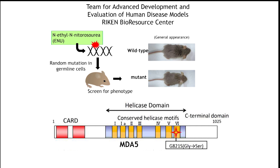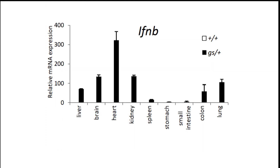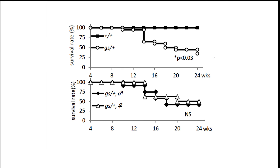Is it beneficial to have interferon constantly prepared in case of viral infection? The answer was provided from studying mice. Experimental random mutagenesis of mice produced a mouse strain with a mutation in the gene encoding MDA5. A single amino acid of MDA5 in this mouse is altered from glycine to serine. Therefore, we term this strain the GS mouse. The GS mouse is small compared to the wild-type mouse, and to our surprise, it exhibits constant production of interferon in a variety of organs, which is never observed in a normal mouse.